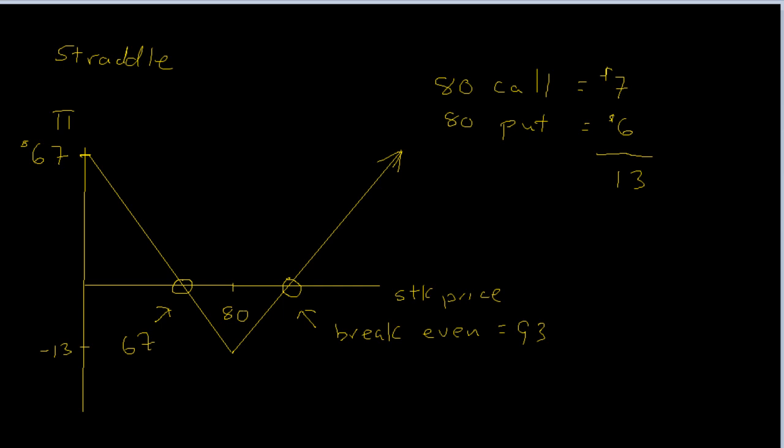In the previous video, we were looking at a straddle. You want to use a straddle when you think that the stock price is going to move a lot, but you don't know in which direction the stock price is going to move. The example I gave is a company that has essentially bet the fortunes of the company on a new product. If the product is successful, the price of the stock will double, triple, quadruple. If the product is unsuccessful, the company could be bankrupt.